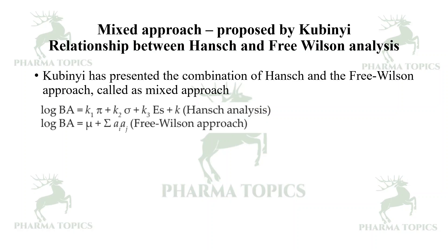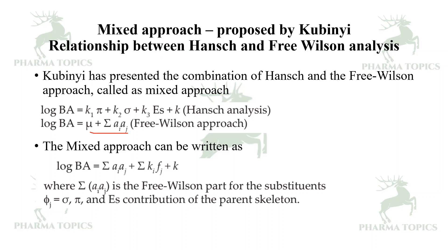To address limitations of both approaches, Kubinyi proposed a mixed approach combining Hansch and Free-Wilson analyses. In Hansch analysis: log BA = k₁π + k₂σ + …; in Free-Wilson: μ = Σ(aᵢaⱼ). The mixed approach clubs these: log BA = (Hansch parameters for parent skeleton) + (Free-Wilson substituent contributions Σaᵢaⱼ). This combined approach has several advantages and is still used in QSAR.